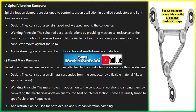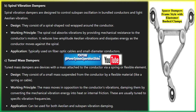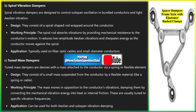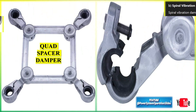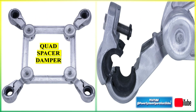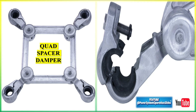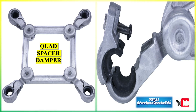Spiral vibration dampers are designed to control subspan oscillation in bundled conductors and light Aeolian vibration. They consist of a spiral-shaped rod wrapped around the conductor. The spiral rod absorbs vibrations by providing mechanical resistance to the conductor's motion, reducing low-amplitude Aeolian vibrations and dissipating energy as the conductor moves against the spiral. They are typically used on fiber-optic cables and small-diameter conductors.